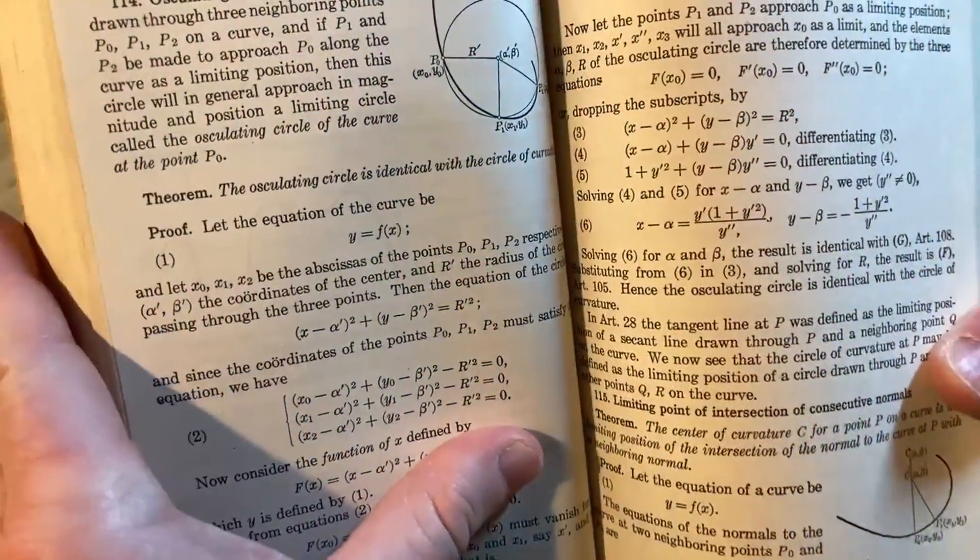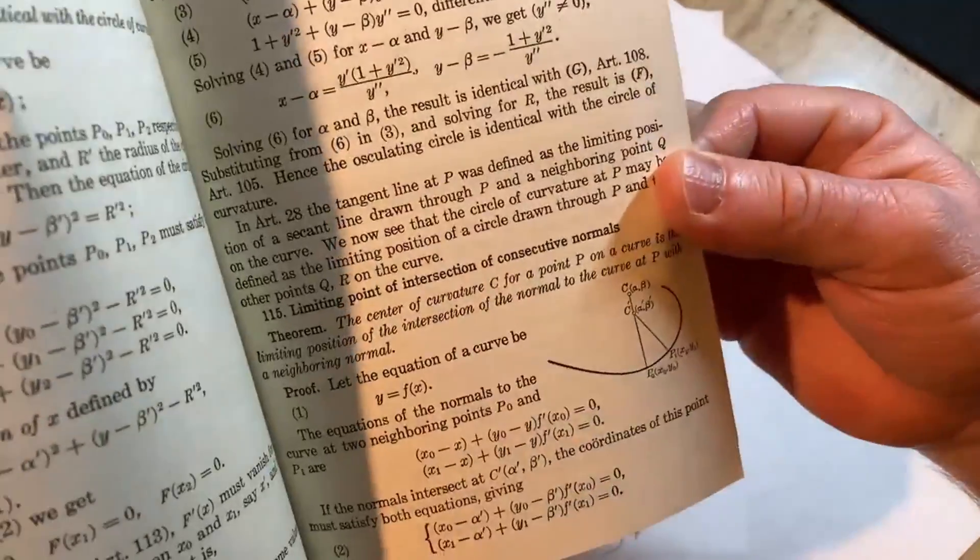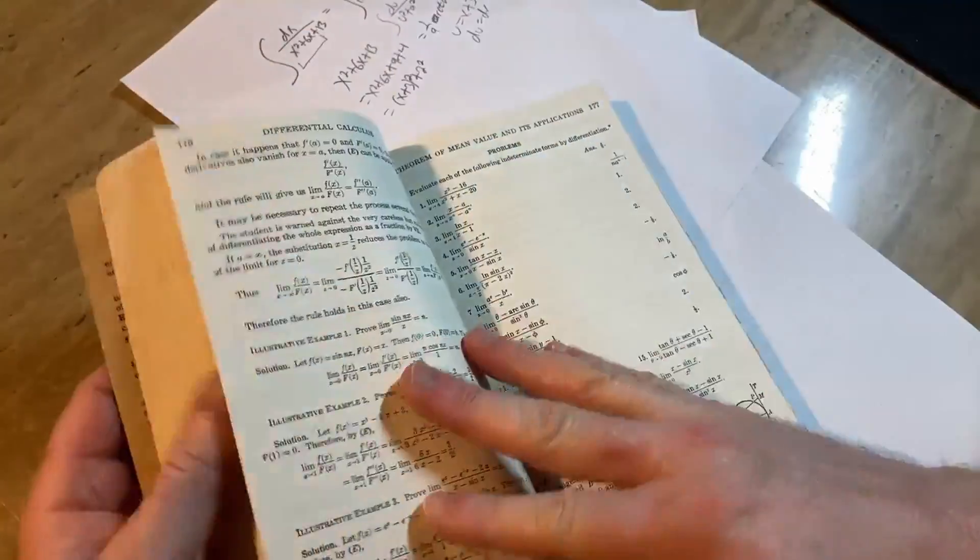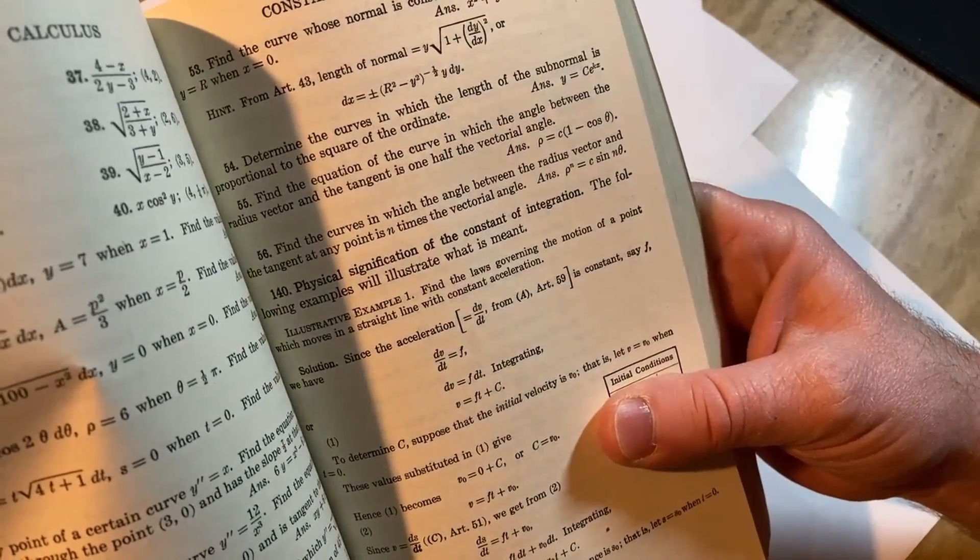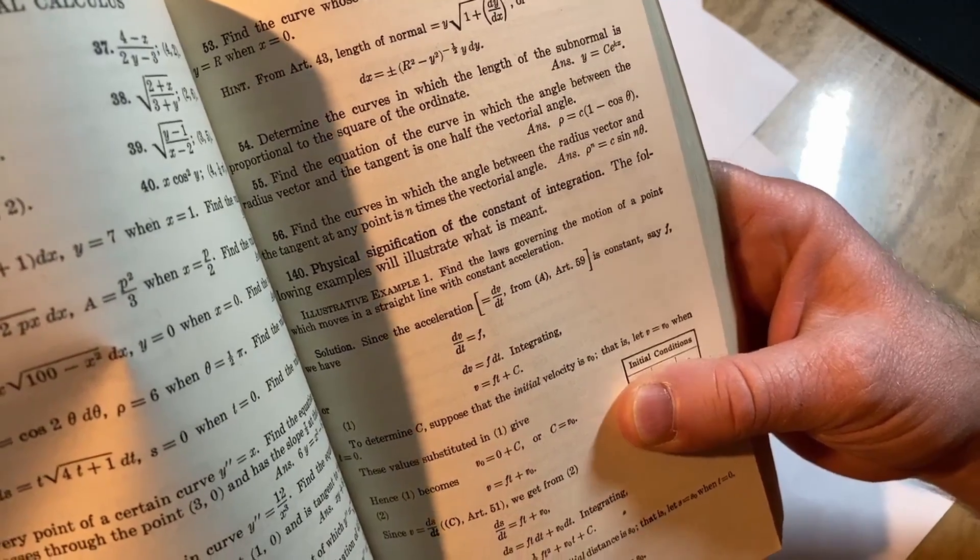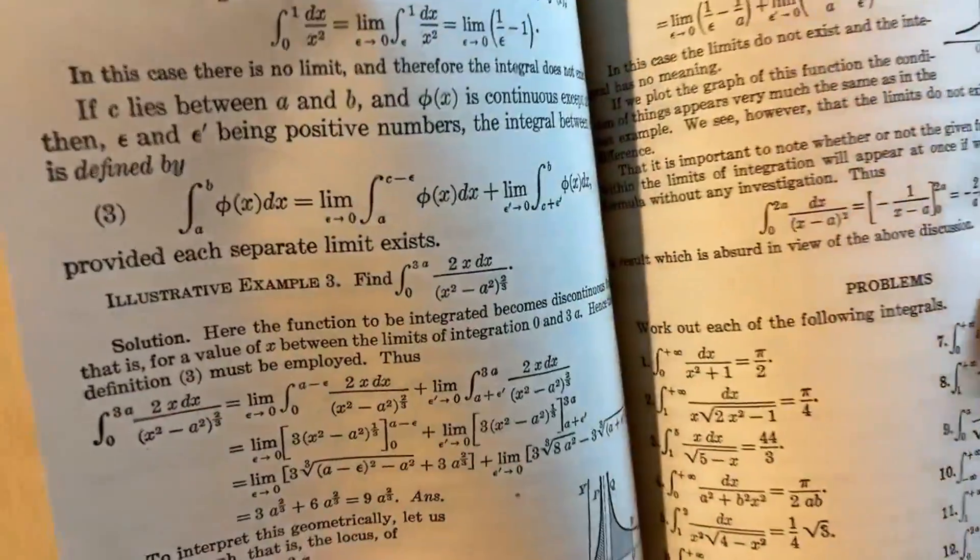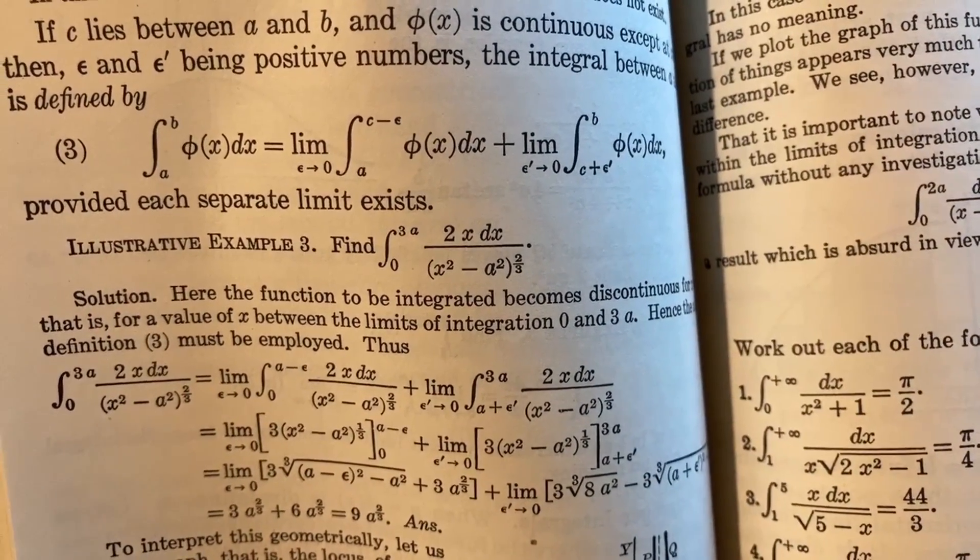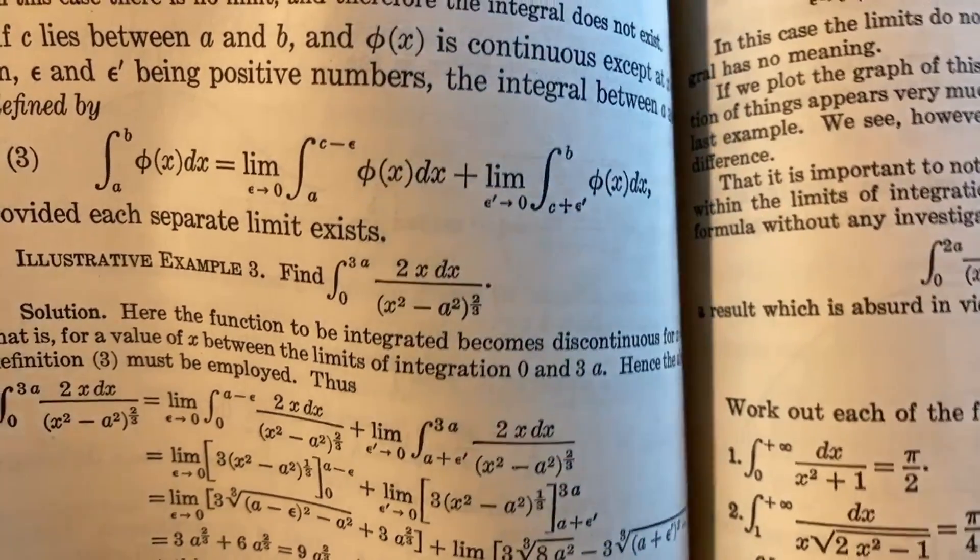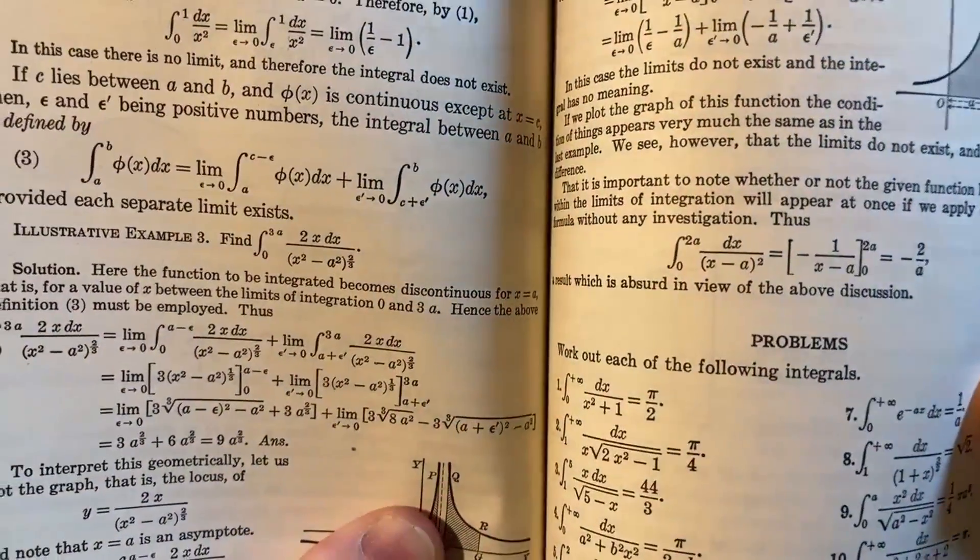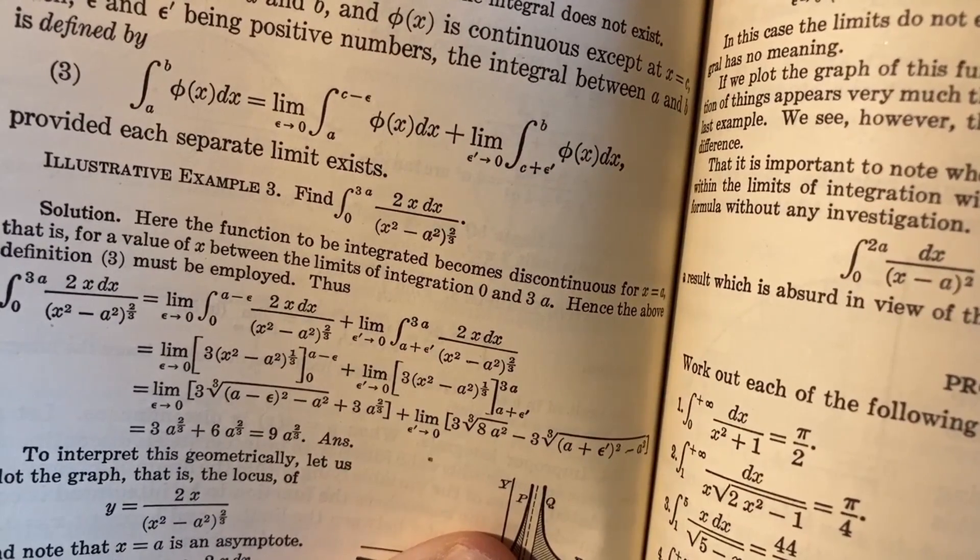Like what's this? The oscillating circle is identical with the circle of curvature. Limiting point of intersection of consecutive normals. That might be stuff you see. Physical signification of the constant of integration. Here's an example. Illustrative example 3. So we have an integral here. It's 2x dx over (x^2 - a^2)^(2/3) and we're going from zero to 3a. Here the function to be integrated becomes discontinuous for x equals a. You can't see it because the book there you go. For x equals a. That is for a value of x between the limits of integration zero and 3a. Hence the above definition must be employed. So you break it up.